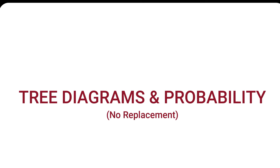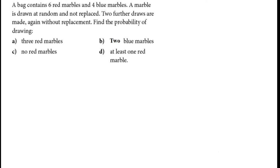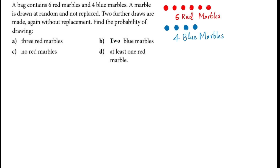Today the topic is on tree diagrams in probability questions which involves no replacement. A bag contains six red marbles and four blue marbles. A marble is drawn at random and not replaced. This is something different from earlier questions — the marble you take at random is not replaced, meaning you don't put it back.